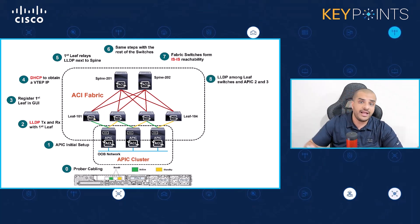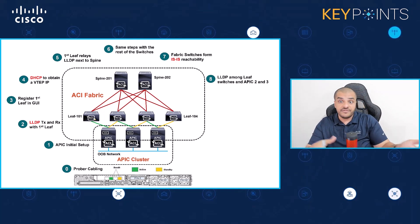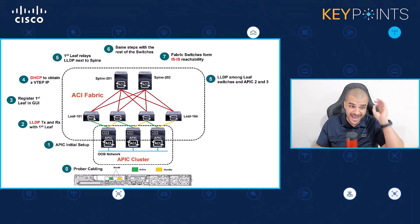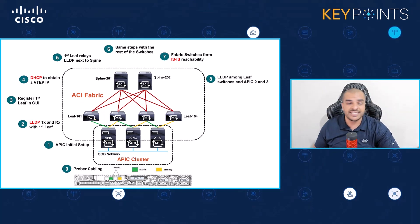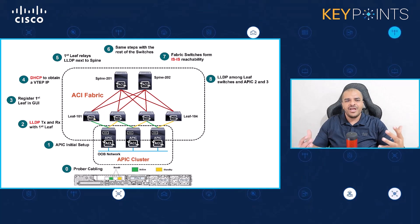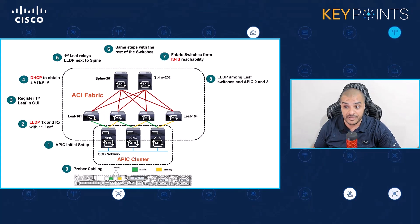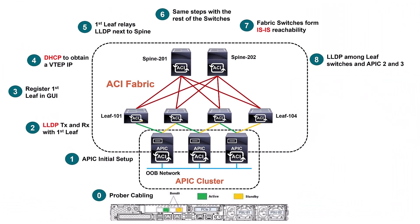Next, more LLDP messages are forwarded to the remaining APICs in the cluster. We were talking about the master APIC first, but now the two other APICs receive LLDP messages informing them of all the devices discovered by the first APIC. The three APICs join together and become a real APIC cluster, with configuration distributed across all APIC members.